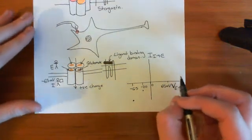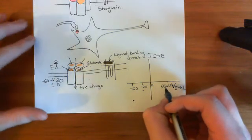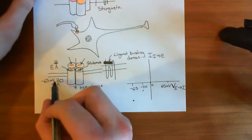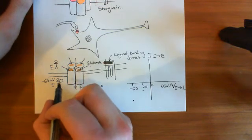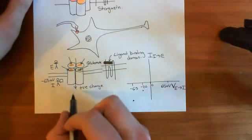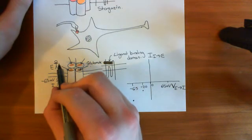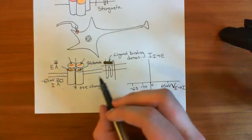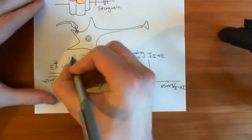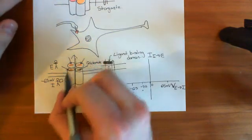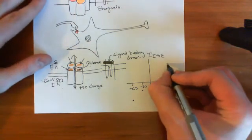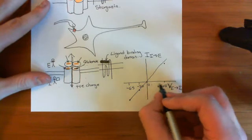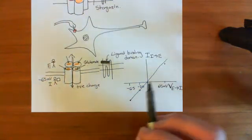What you actually see experimentally is a straight line passing through the origin on the current-voltage plot. At plus 65 millivolts you get a positive current; at minus 65 millivolts you get a negative current; and at zero millivolts the current is zero. This fits our intuition quite nicely.